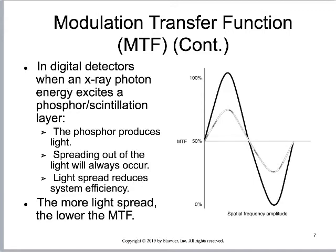The more the light spread, the lower the modulation transfer function. It's not able to represent something that small because beyond a certain point, it's just light spread from the phosphor. Some of the noise on our picture comes from the system itself — it came from the phosphor, from the way we acquired the image.